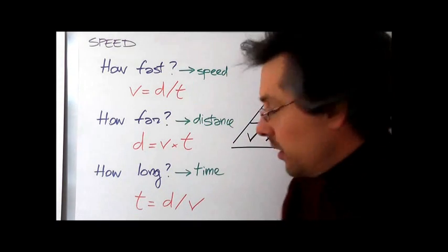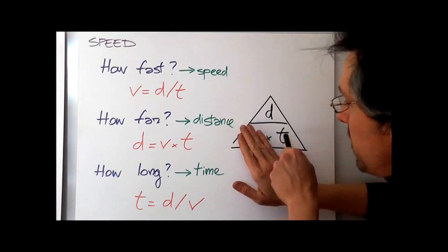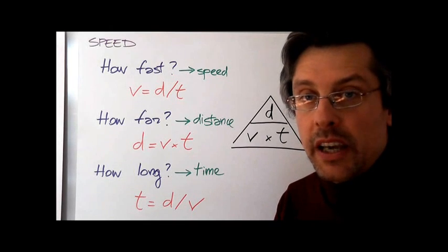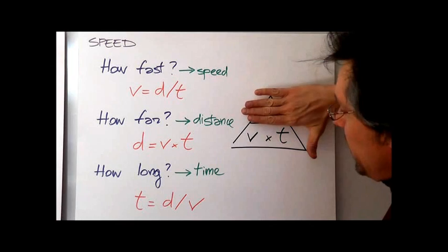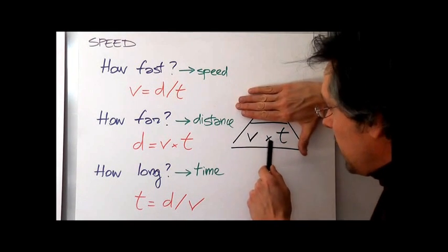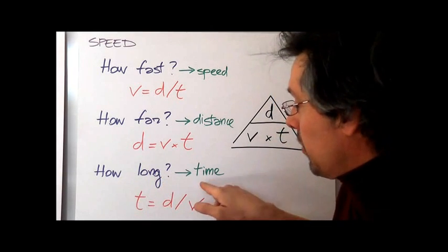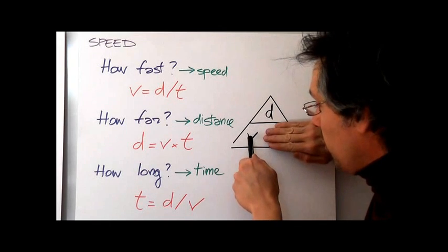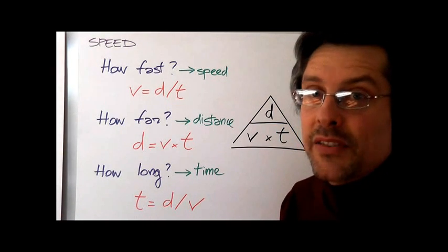How fast? Looking for speed, I cover the V, and there you go: distance over time. And that's the formula we had at the very beginning. How far? Asking for distance. I cover the distance, and there you go: speed times time. And that's our formula. Finally, how long? I want to find the time. Distance over speed. And that's our formula. It's that easy.